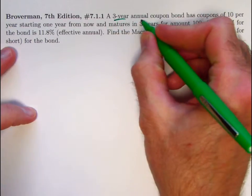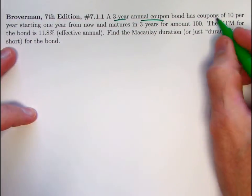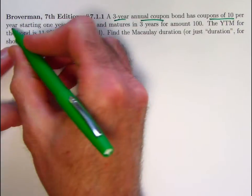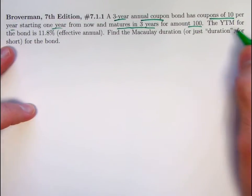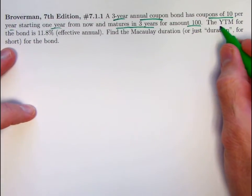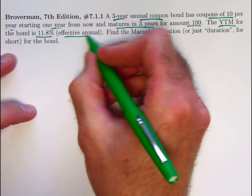Here's the situation. We have a three-year annual coupon bond. To keep things simple, we assume annual coupons. The coupons are 10 per year, starting one year from now and maturing in three years for amount 100. The YTM, which means yield to maturity, for the bond is 11.8% effective annual.